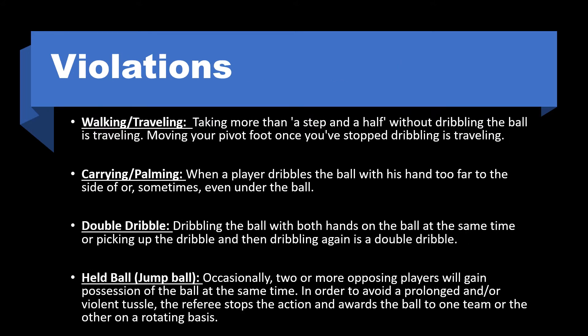Violations: walking or traveling is taking more than a step and a half without dribbling the ball, or moving your pivot foot once you've stopped dribbling. Carrying or palming is when a player dribbles the ball with the hand too far to the side, up, or sometimes even under the ball. Double dribble is dribbling the ball with both hands at the same time, or picking up the dribble and then dribbling again. A held ball occurs when two or more opposing players gain possession at the same time; the referee stops action and awards the ball to one team on a rotating basis.